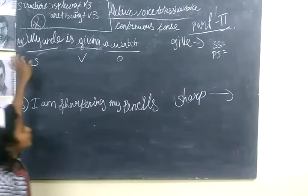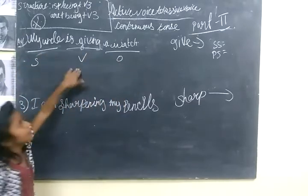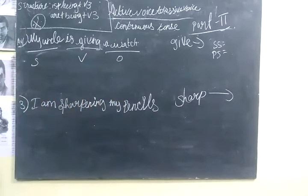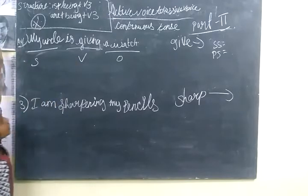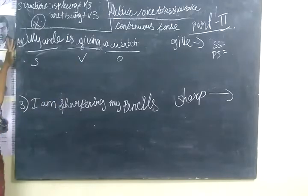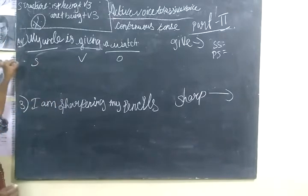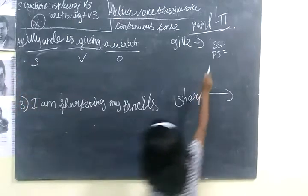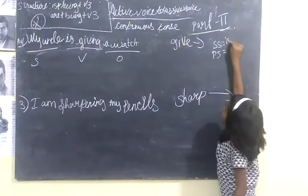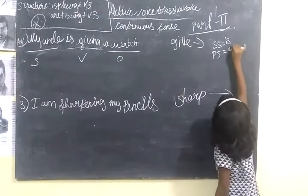Now we are going to see the verb and see the structure. You are going to see whether it is singular or plural. For a singular subject we should use 'is', and for a plural subject we should use 'are'.